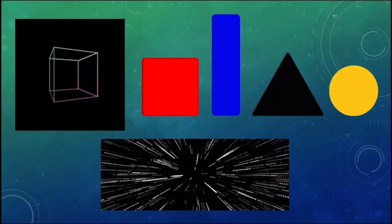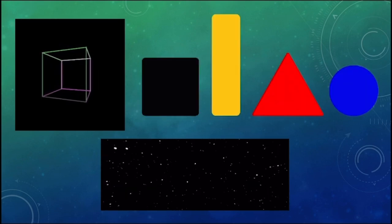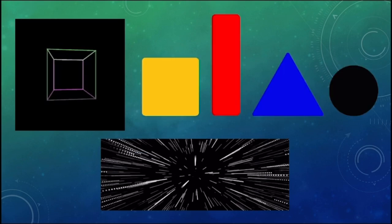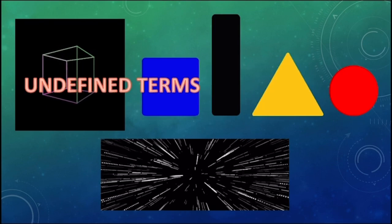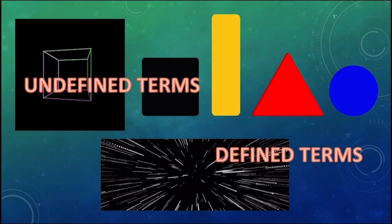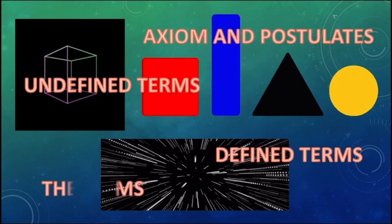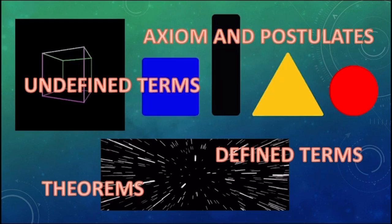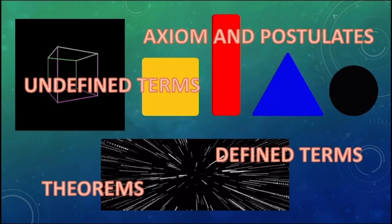In the previous lesson of this module, mathematical systems were defined and described, which mainly have four parts or axiomatic structure: undefined terms, defined terms, axioms and postulates, and theorems. In this lesson, illustrative examples of how to illustrate this mathematical system through axiomatic structure will be given more emphasis.